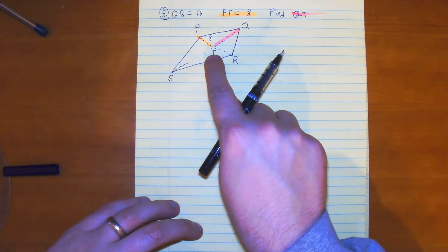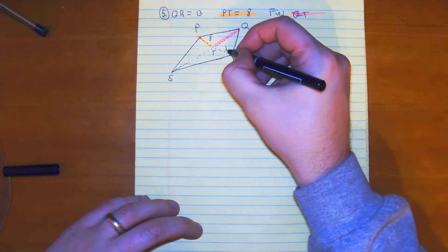And we know that T is a midpoint between PR, so if that's 8, this is 8 as well.